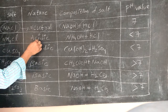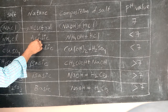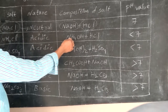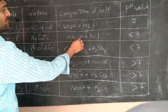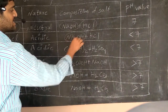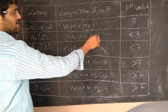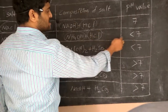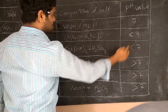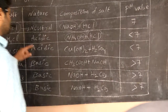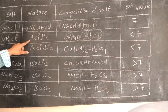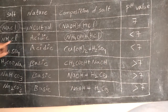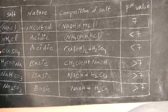The next one is NH4Cl, which is an acidic salt. Why? Because here a weak base is combined with a strong acid. The resultant pH value is less than 7, that's why it is called an acidic salt.